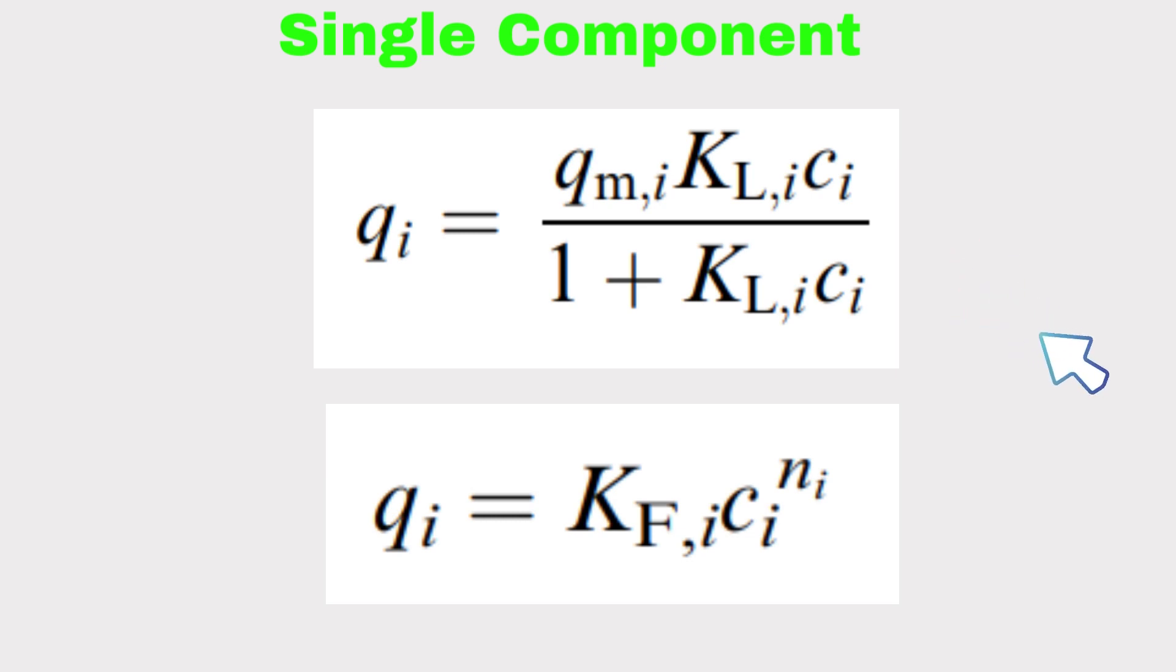And Freundlich model: qi equal to kf times ci to the power n, where qi is the amount adsorbed, qm is the maximum adsorption capacity, kl is the Langmuir constant, ci is the equilibrium concentration. Here, kf is the Freundlich constant, and n is the exponential. So these are the single component systems.